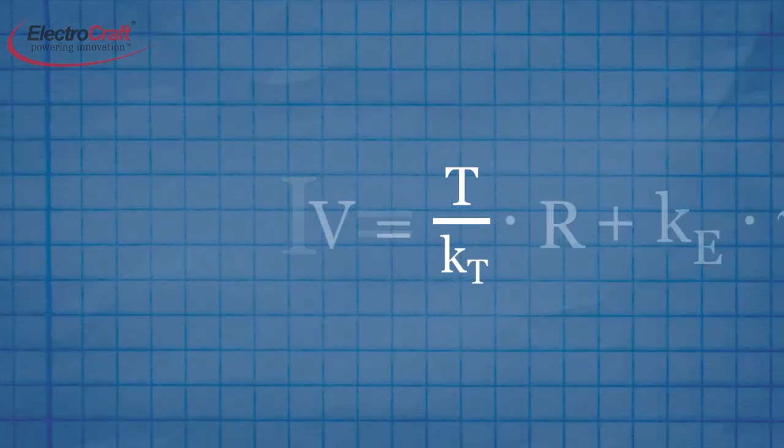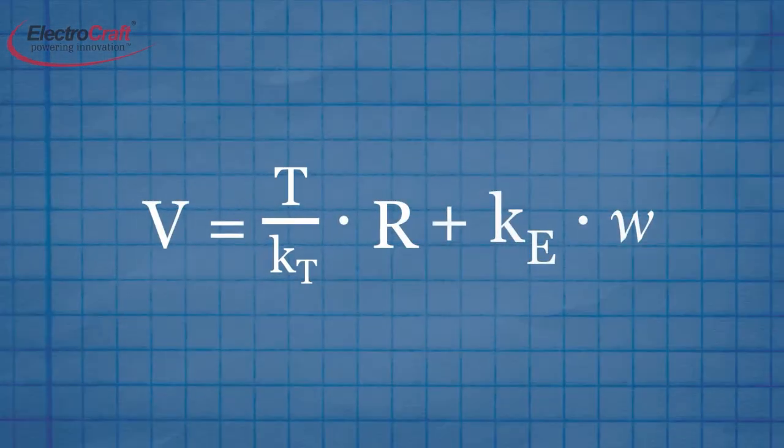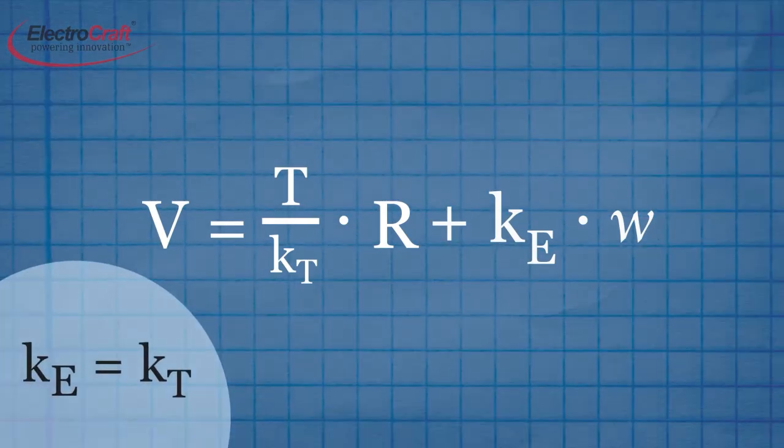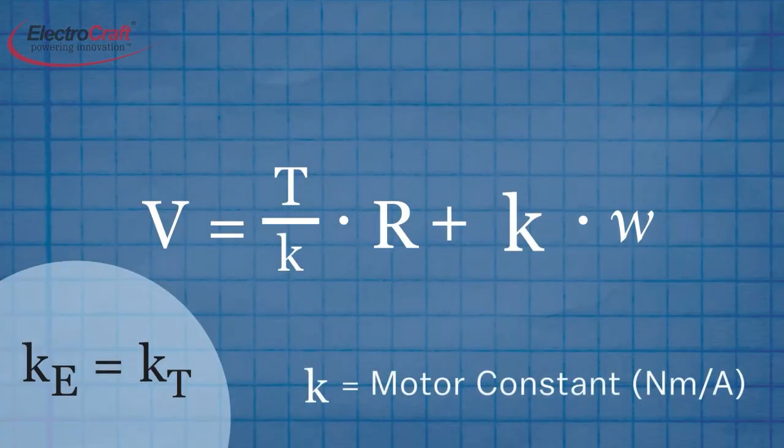Now, substituting I in the voltage equation gives us a new voltage equation that shows the relationships between voltage, angular velocity, and torque. For DC motors, the torque constant K sub T and the electrical constant K sub E are equal and can be replaced with K, the motor constant.